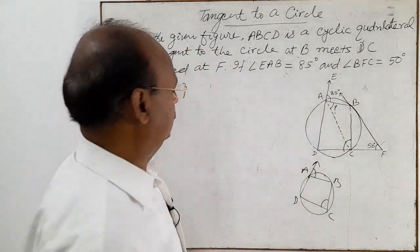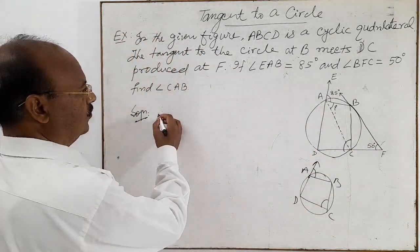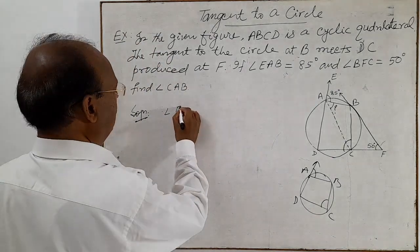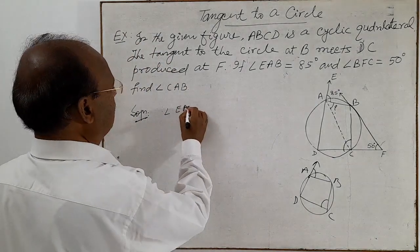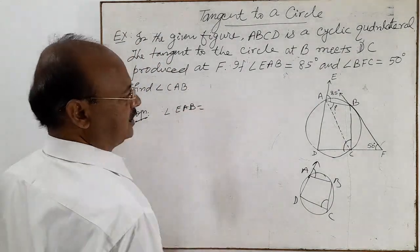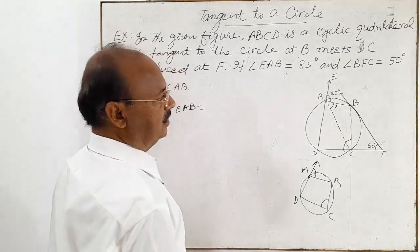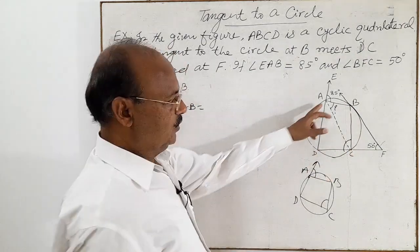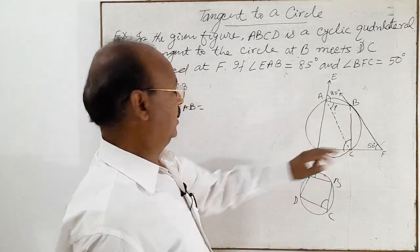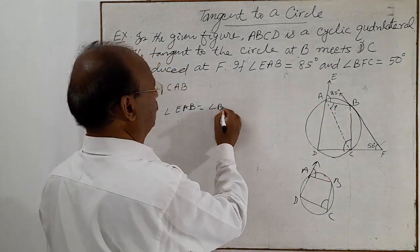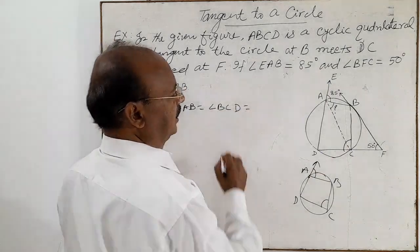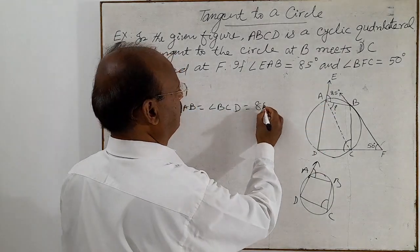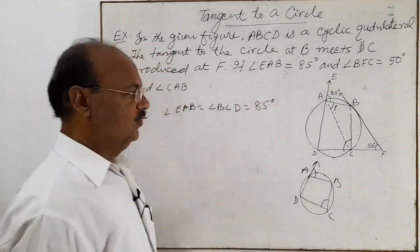So here, angle EAB is equal to the opposite internal angle BCD, and this is equal to 85 degrees.